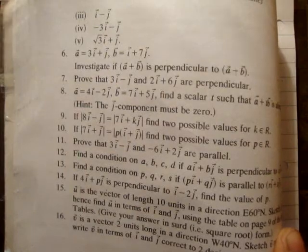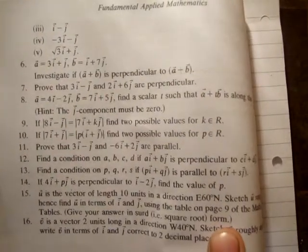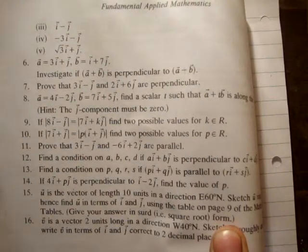Given A and given B, find a scalar T such that A plus T times B is along the i-hat axis, or the x-axis or the i-hat unit vector direction. So, let's do that. Right.